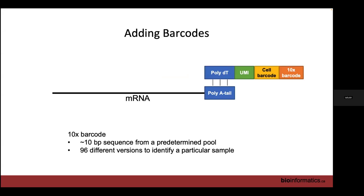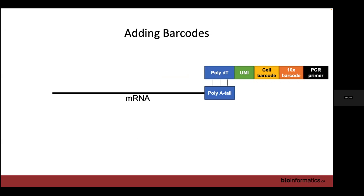We also have a 10x barcode that labels which sample a read comes from — there are 96 different ones, so you can run 96 different experiments and sequence them all in one run. These are 10 base pair sequences, and we tend to let the sequencing facility handle demultiplexing. Then we have PCR primers used to amplify our mRNA molecules from picograms to nanograms or more for our sequencing libraries.